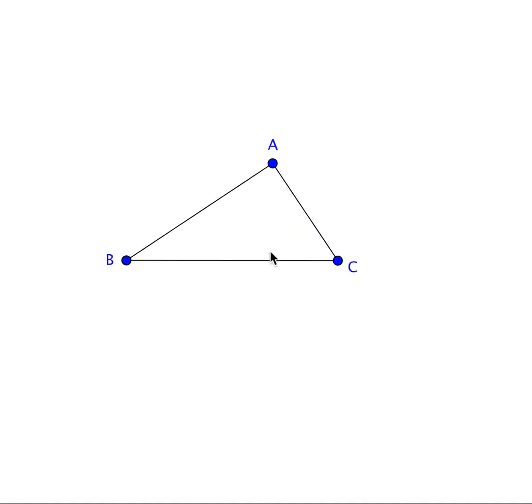First, if two triangles have two sides of the one equal to two sides of the other, each to each, and the angles included by those sides equal, then the triangles are congruent.